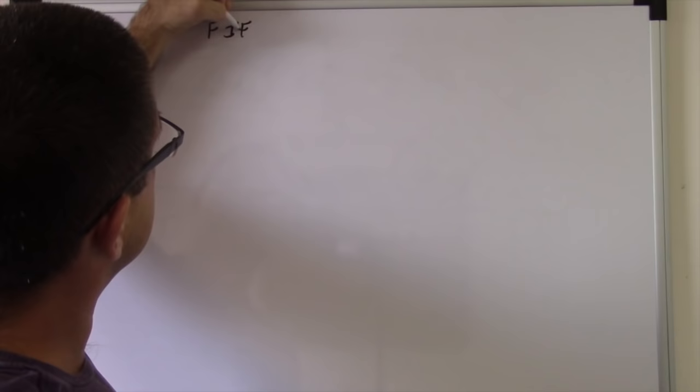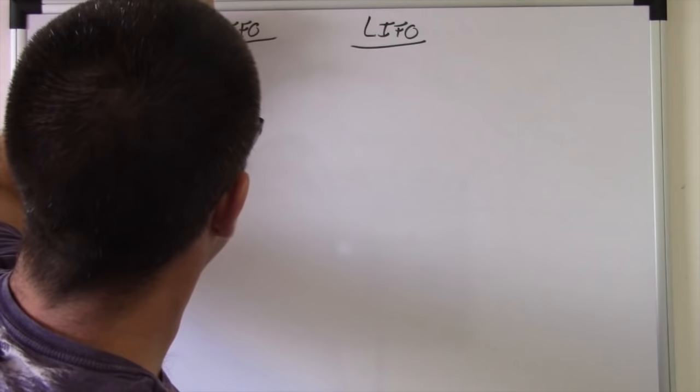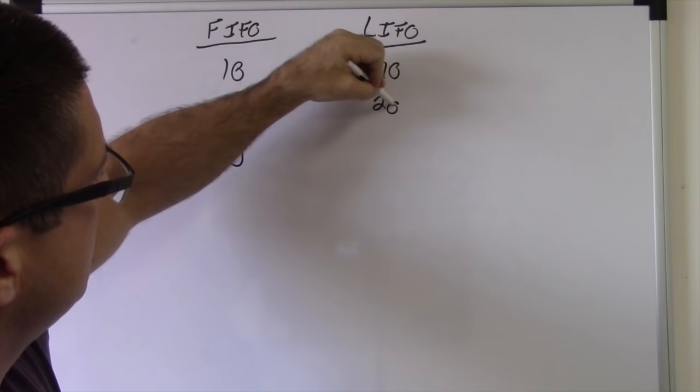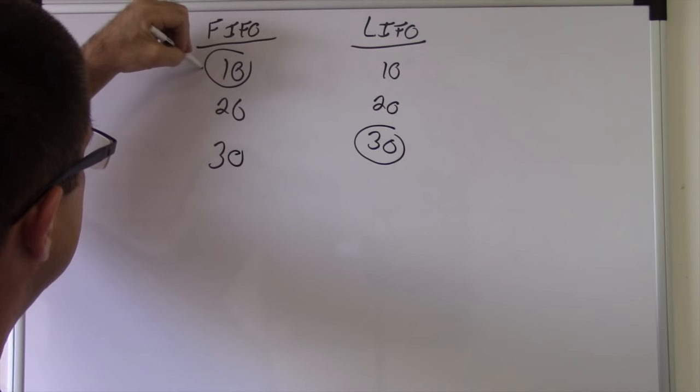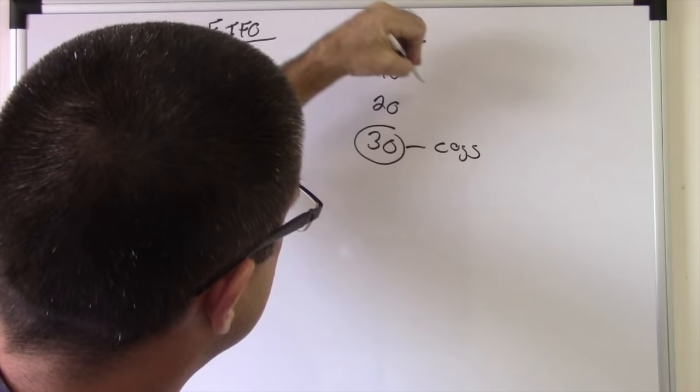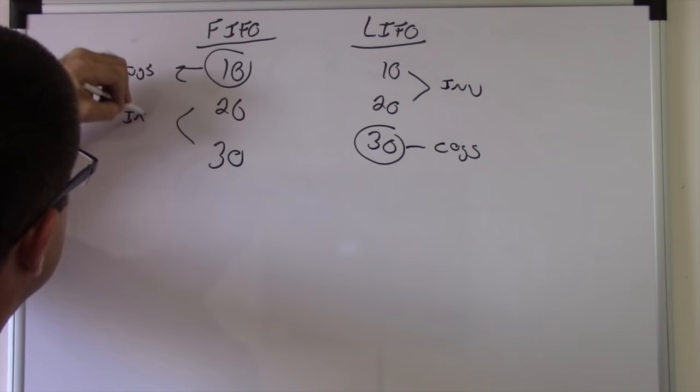FIFO, because it's the first one, it's LIFO. 10, 20, 30. 10, 20, 30. First in first out, last in first out. COGS, COGS, inventory.